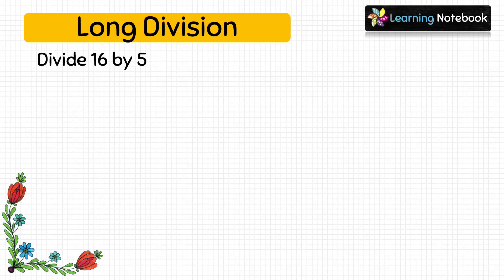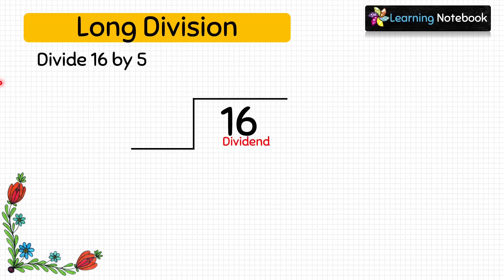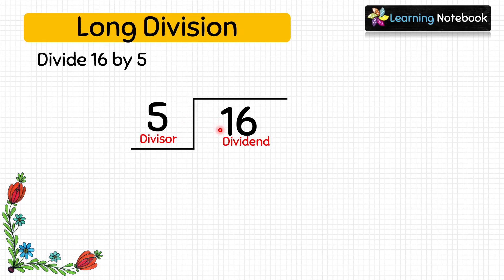The question is: divide 16 by 5. To start the long division, we form a tent and put the dividend inside the tent and the divisor outside the tent. So we put 16 inside the tent and 5 outside. Now take a look at the first digit of the dividend, which is 1. Since 1 is smaller than 5, we cannot start the division, so let's take both 1 and 6 — we get 16.